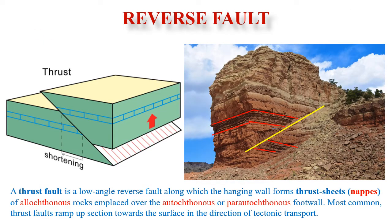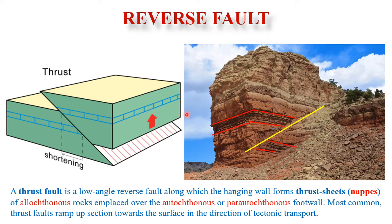In a reverse fault, the hanging wall moves up and over the foot wall — it is a dip-slip fault. Consequently, older rocks are brought over younger rocks. Because such faults exhibit repetition or overlap of geological horizons, they are termed compressional faults, as they develop in compressional regimes. They lead to shortening of the lithosphere, whereas normal faults lead to extension.